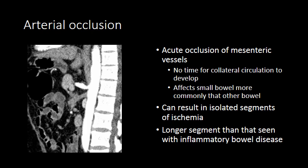When there is arterial occlusion, the inflammation and changes in the bowel wall will often be longer in segment than that seen with inflammatory bowel disease. For example, an occluded superior mesenteric artery will knock out blood supply to a very large continuous segment of bowel, whereas in Crohn's disease you tend to see multiple short segments of affected bowel with intervening normal or dilated bowel.